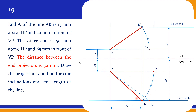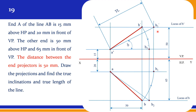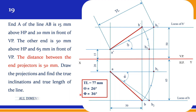There are two ways to proceed — we can rotate it, or since we know the true length we can cut the arc and proceed. I am rotating AB and getting the B1 point. Joining A' and B1' gives the true length line. Measuring gives a true length of 77 mm, theta equal to 26 degrees, and phi equal to 36 degrees. Please cross-check this answer.